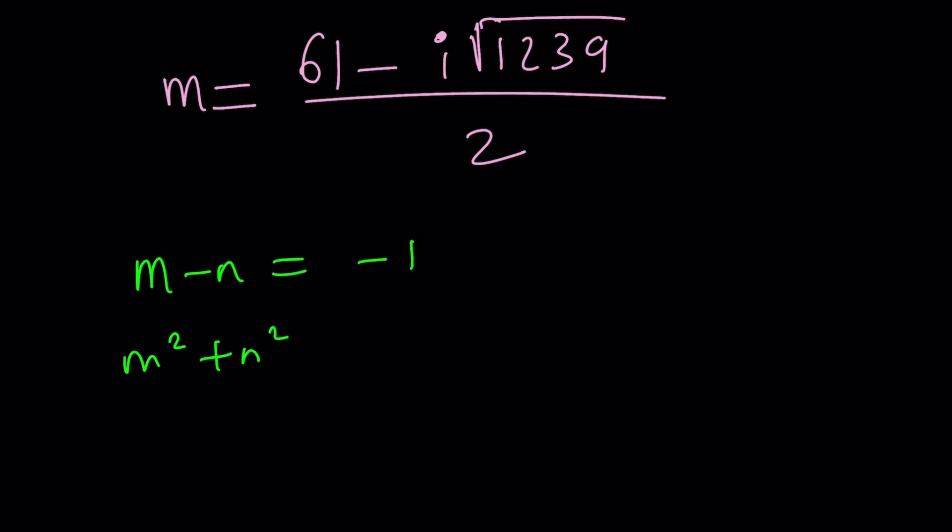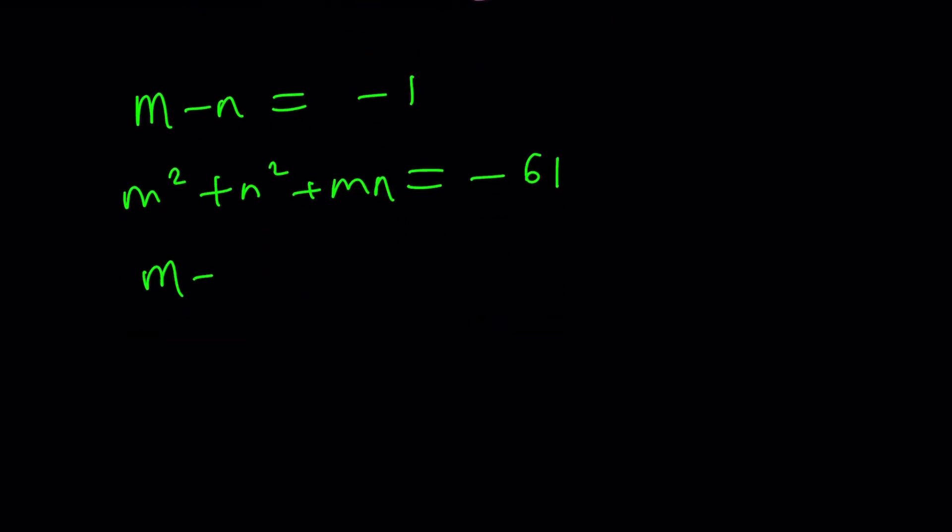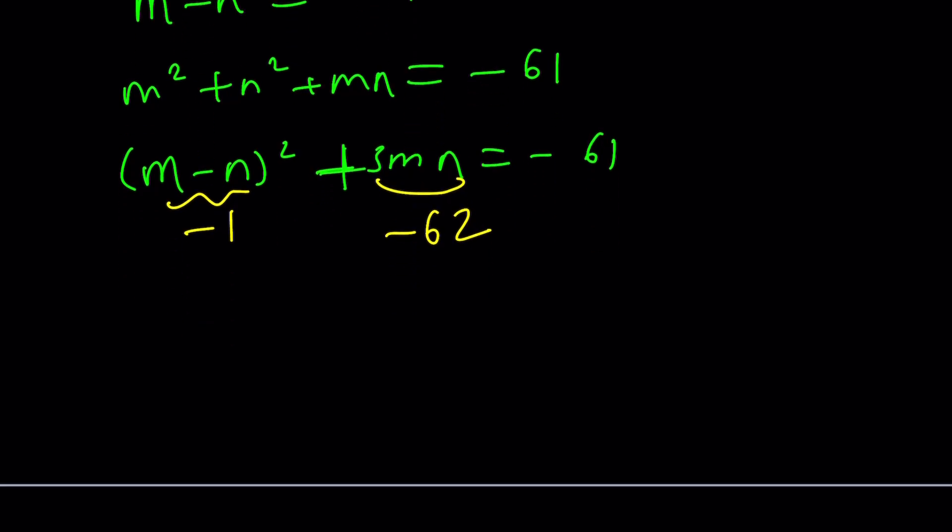One thing that we didn't consider, though, we didn't look at the negatives. Do you think they're going to work? Let's check it out. For example, m minus n can be negative 1, and m squared plus mn plus n squared can be negative 61. Is that possible? If m minus n squared plus 3mn equals negative 61, and this is negative 1, its square is going to be 1. Subtract, you're going to hit negative 62. So this needs to be negative 62, but that's not divisible by 3. So negative 1 is not going to work. And if you switch them around, I don't think that's going to work either, but that's for you to check.